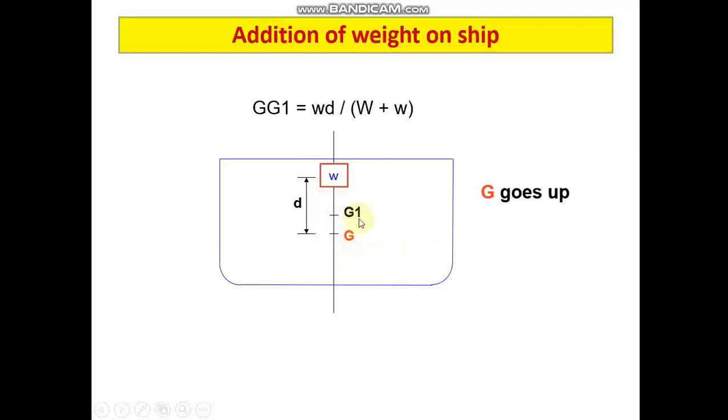Suppose we are adding a mass w, and the location of this added mass w is at a distance d above the original center of gravity G. Because of this addition of this weight, your new center of gravity will go up. It will go from G to G1, such that G1 is at a direction towards w from G. The distance GG1 we can find out using the formula: w into d divided by W plus w, where small w is the added mass and capital W is the displacement of the vessel.